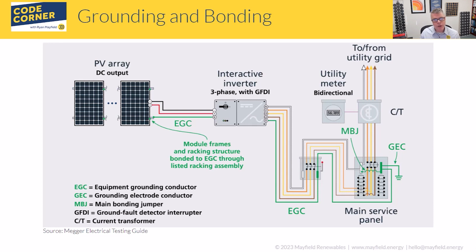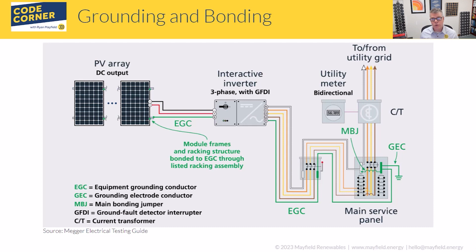The equipment grounding conductor connects the PV array back to the inverter. In modern systems using non-isolated or transformerless inverters, the EGC actually continues out of the inverter on the AC side, through the disconnect, all the way to the point of interconnection. In this grid-direct example with no storage, the EGC runs from the PV array all the way to the main service panel where it's bonded to the grounding system.